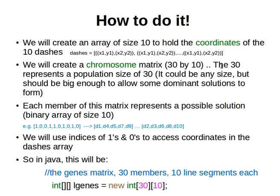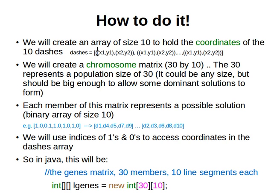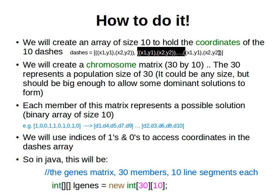The two important things are: the representation of the solution, and the fitness function — how to evaluate the solution. So we create an array of size 10 to hold the coordinates of the 10 dashes. This is the dashes array, with x1, y1, x2, y2 of each dash — first dash, second dash, third dash, and so on.